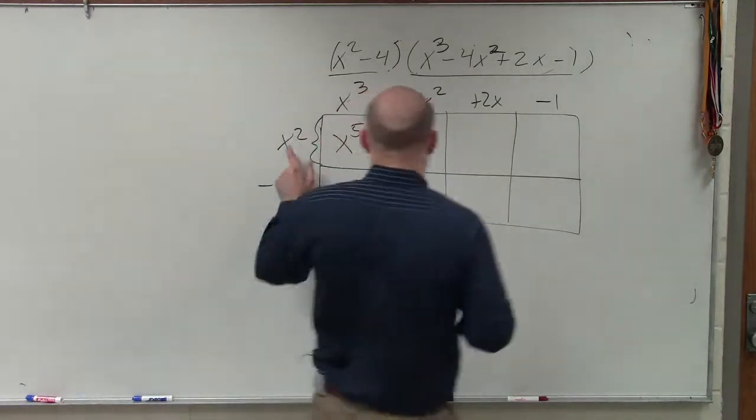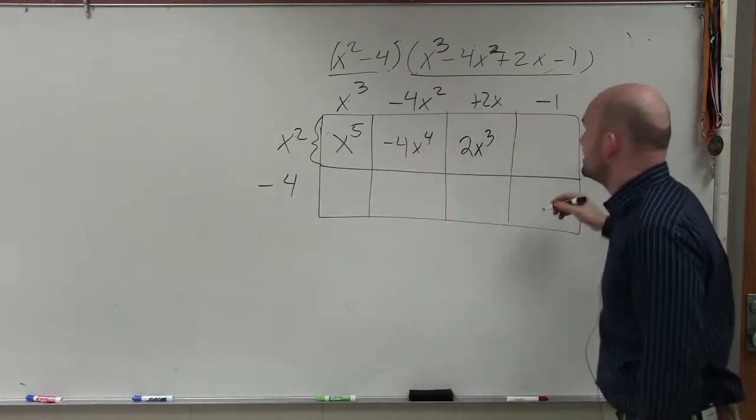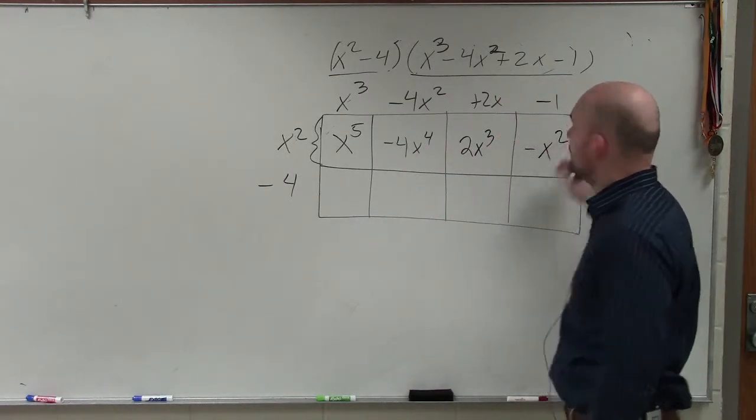Harris, please stop talking. x squared times 2x is going to be 2x cubed, and then x squared times negative 1 is a negative x squared.